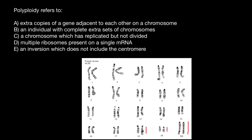But if we have one extra chromosome for each pair, in this case we do not call this trisomy. Instead, we call this triploidy — so we have three sets of chromosomes.